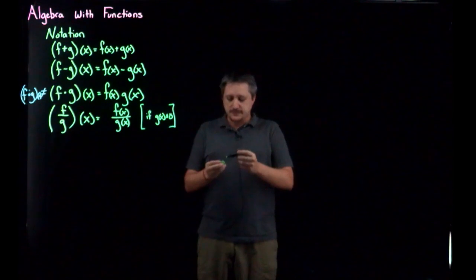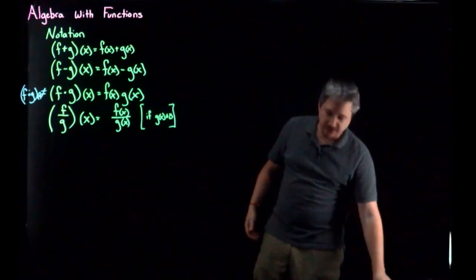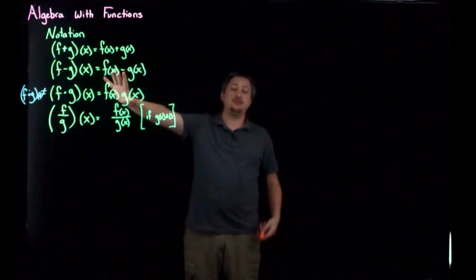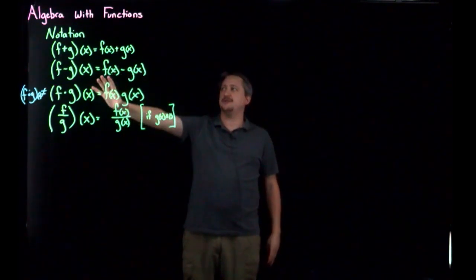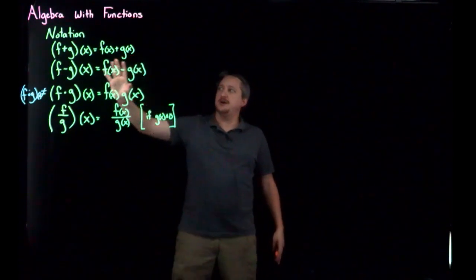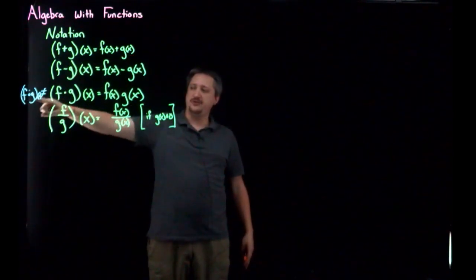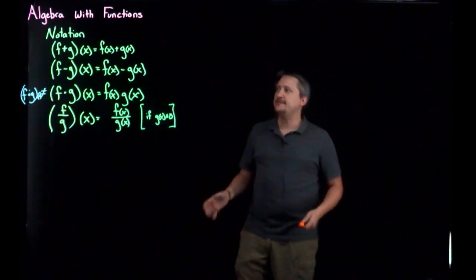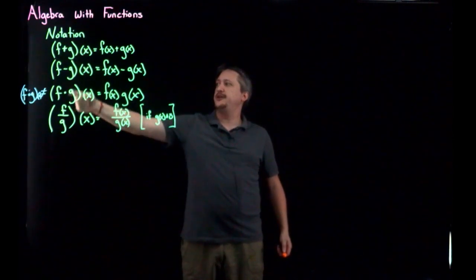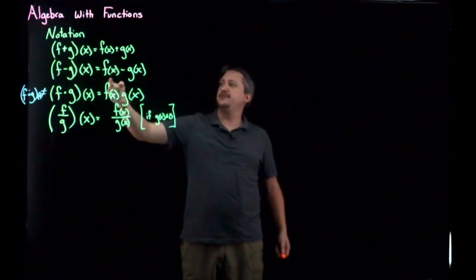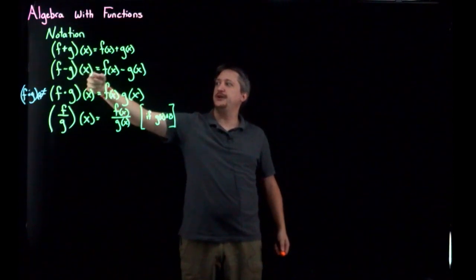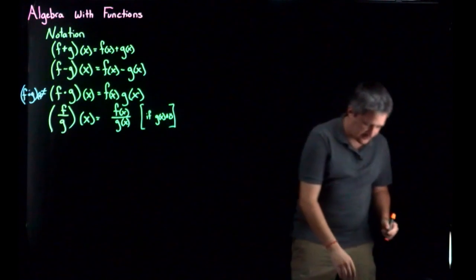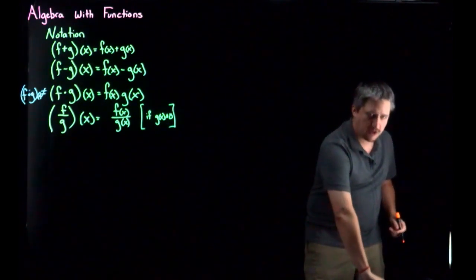So that really is all there is to the notation. These are all pointwise definitions. We talked about adding, subtracting, multiplying — not the same as composition — and dividing. They work exactly as you'd expect: F minus G is F of X minus G of X; you apply it to the thing separately. Let me give some examples.